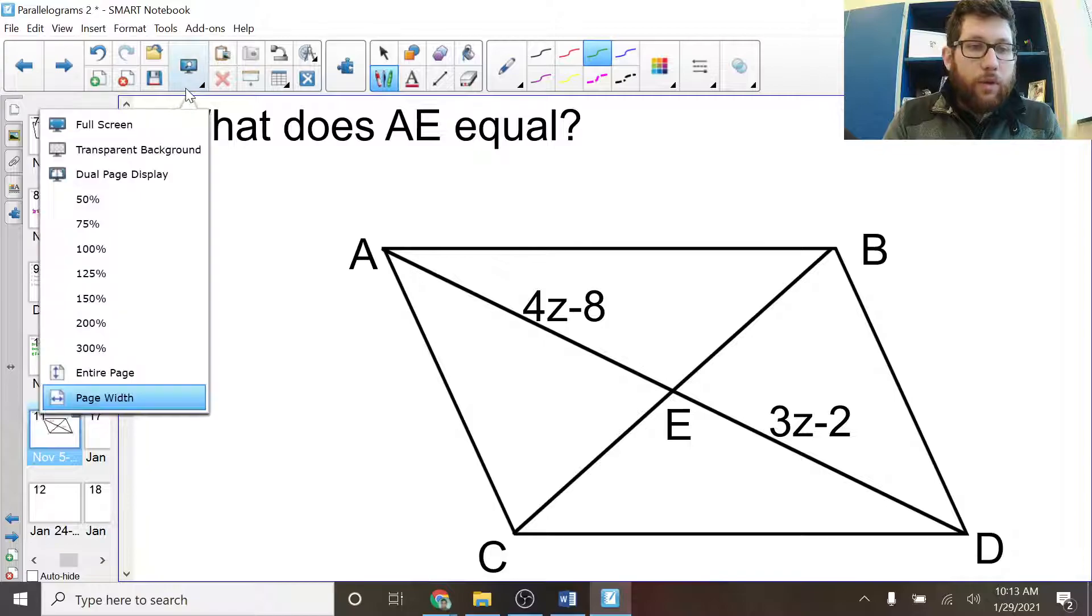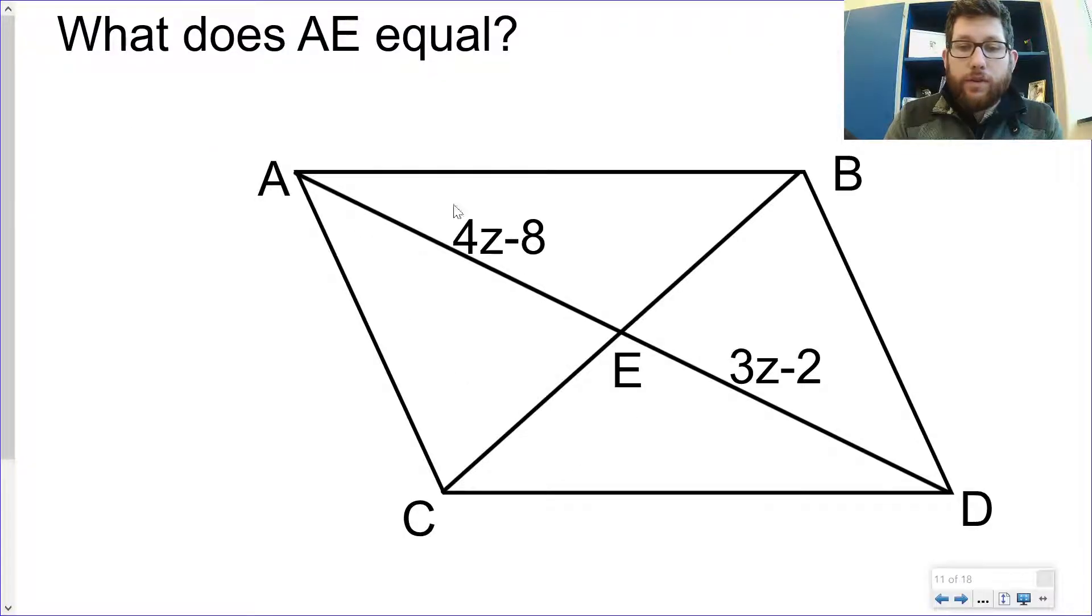Let's do one more. Now notice where our variables are, where our expressions are. One of them is on AE, and one of them is on ED. Those are diagonals.